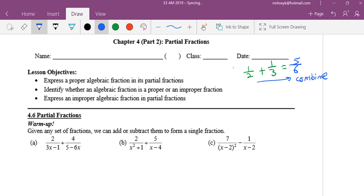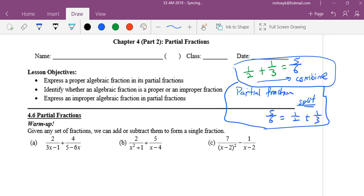Combined. Now, what exactly is partial fraction? Can you write down? Partial fraction means I have five over six, I want to split, I want to split into one-half plus one-third. So today we are going to talk about this idea.